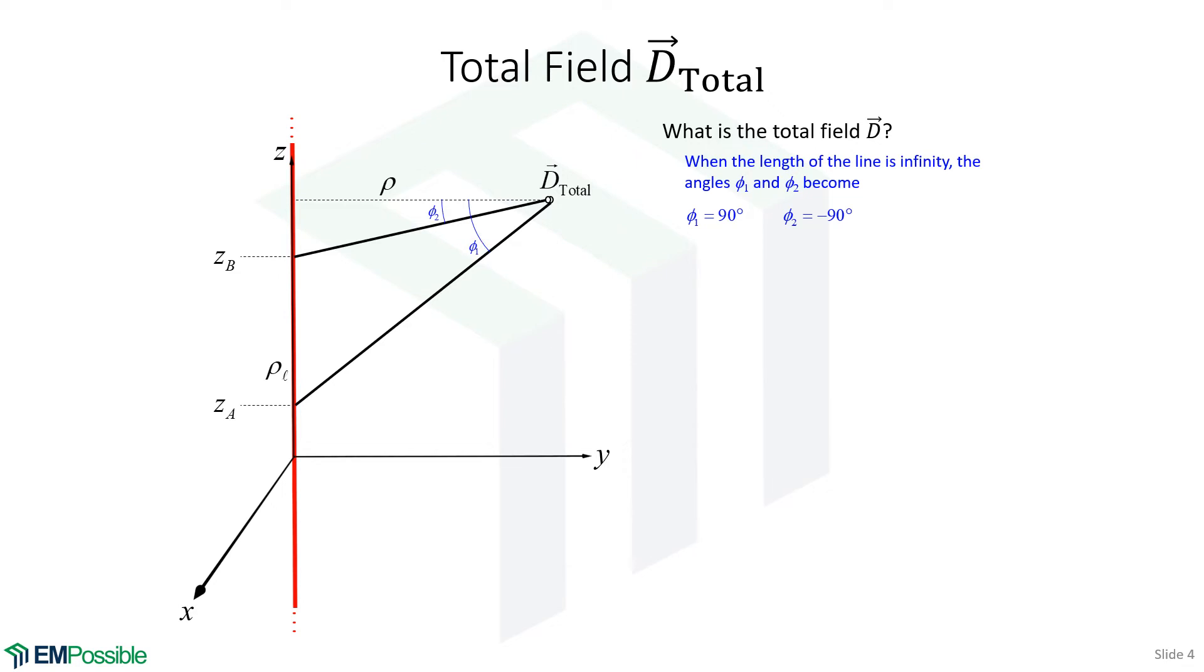Let's look at phi1 first. As the line charge becomes infinite, this point ZA walks downward. That would make phi1 go all the way out to 90 degrees. So phi1 is 90 degrees for the infinite line charge.